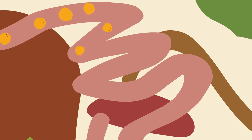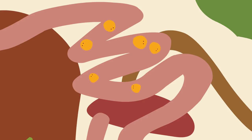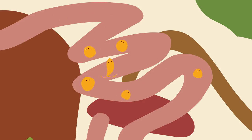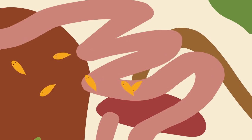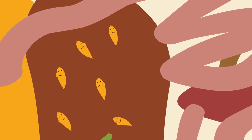Once inside the host animal, the baby fluke hatch out from their cysts and burrow through the wall of the intestine and go off in search of the liver. Once there, they do their best to chew that to pieces, and this is how they cause disease.